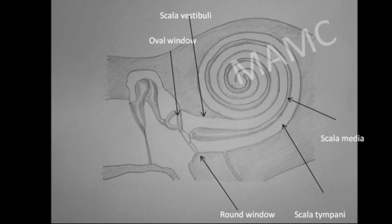Perilymph waves are transmitted from the scala vestibuli via the apex of the cochlea — the helicotrema — to the scala tympani, and are eventually dissipated at the round window.